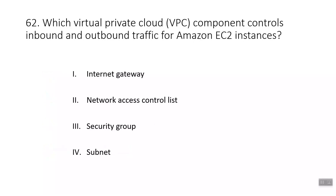Question sixty-two: which VPC component controls inbound and outbound traffic for Amazon EC2 instances? The answer is Security Group, which allows or denies specific inbound and outbound traffic at the resource level. An internet gateway is a connection between a VPC and the internet. A Network Access Control List (ACL) is a virtual firewall controlling traffic at the subnet level. A subnet is a section of a VPC for grouping resources.